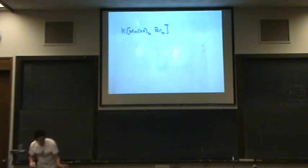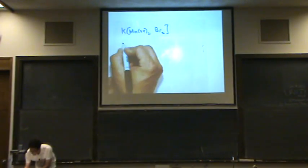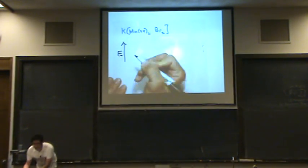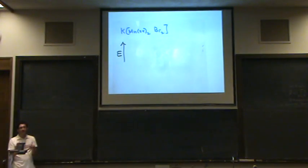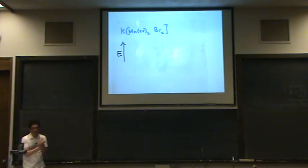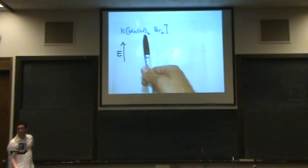To draw this out now, to draw out the CFT, first we have to figure out is it octahedral, is it tetrahedral, square planar, or linear? So you have to figure out how many ligands are there? Well, there's one, two, three, four.